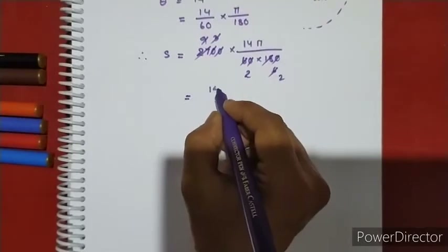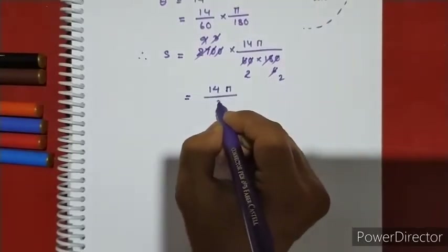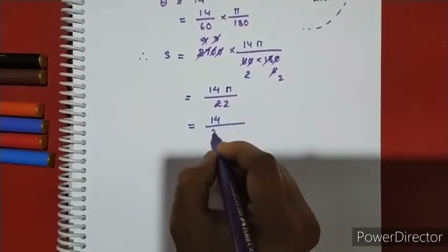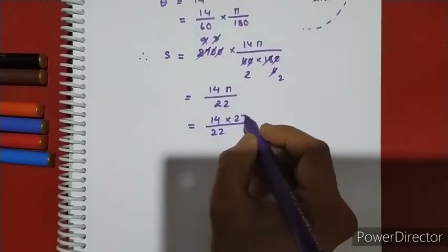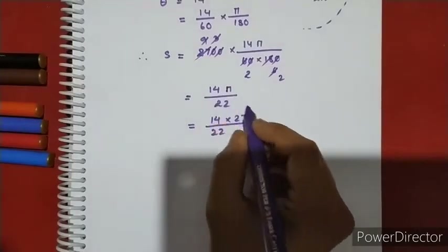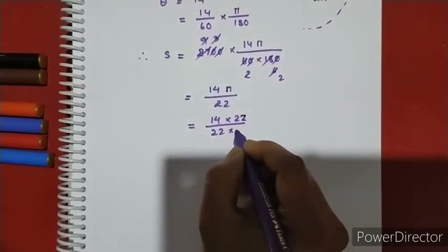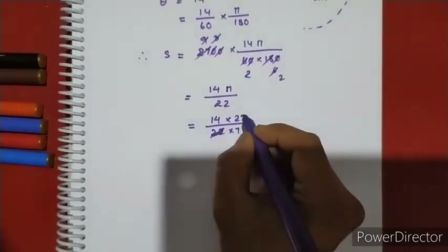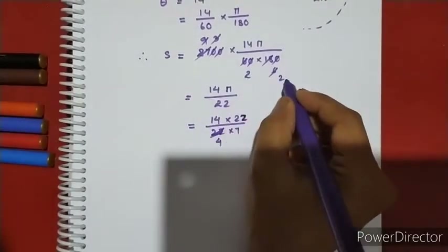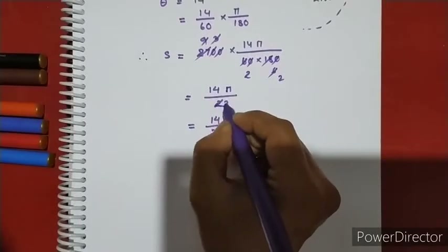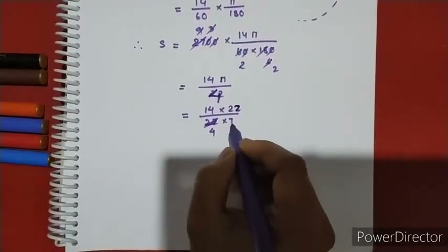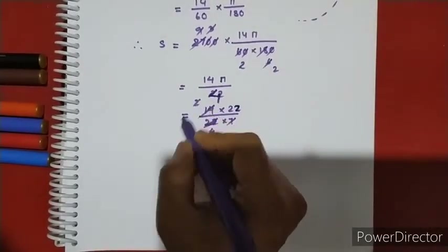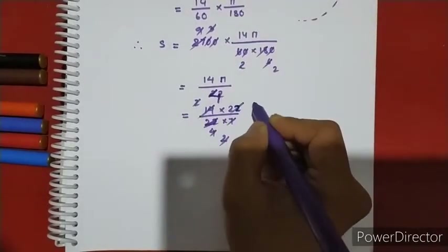Using the arc length formula, with 14 pi by 22 and radius 2,700 meters, we compute the height. The result is approximately 11 square meters — approximately the height of the building.